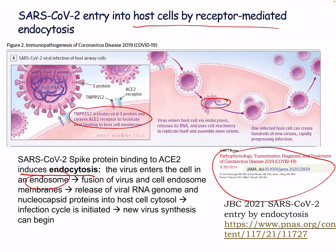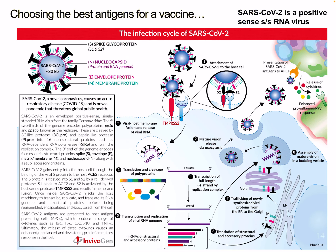SARS-CoV-2 spike protein binds to ACE2, inducing endocytosis. The virus enters the cell in the endosome. Fusion of the virus within the endosomal membranes causes release of the viral RNA genome and nucleocapsid proteins into the host cell cytosol — this is where the infection cycle is initiated and new virus is synthesized. This is a positive-sense single-stranded RNA virus.